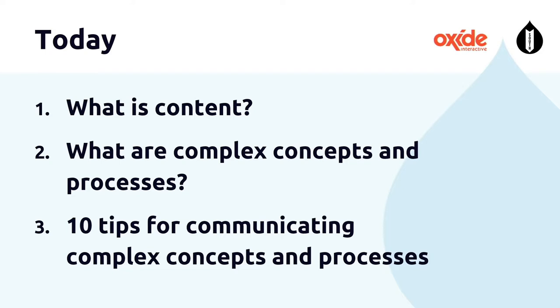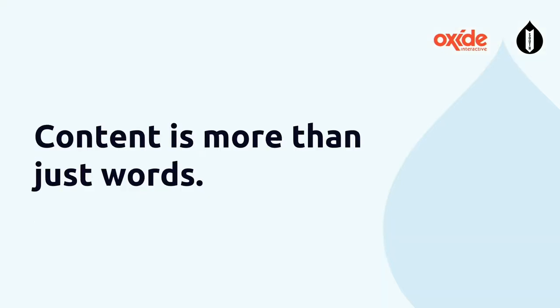Today I'm going to cover three things: first, we'll define content; then we'll define complex concepts and processes; and then I'll take you through ten tips. Content means different things to different people and organizations. At Oxide, content means the pixels that appear inside the frame of a website — and those pixels may comprise words, images, forms, and more. Content is more than just words.